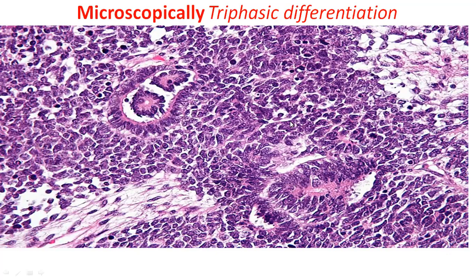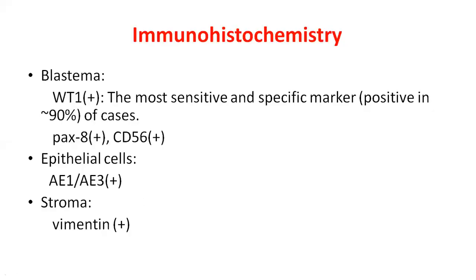All three components are present but in variable amounts — sometimes the epithelial component predominates, sometimes the mesenchymal component is predominant. On immunohistochemistry, the epithelial component is positive for cytokeratins or pan-keratins, the blastemal component is positive for WT1 and PAX8, while the mesenchymal component is positive for vimentin and other mesenchymal stains.